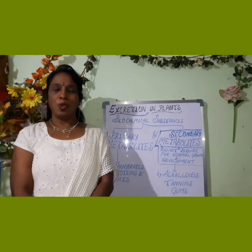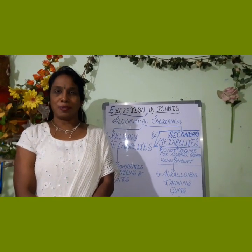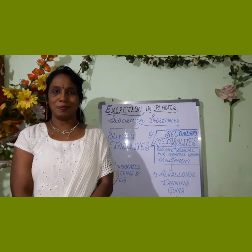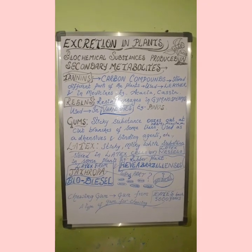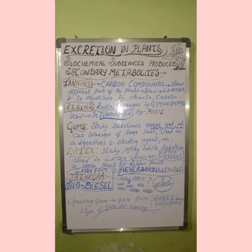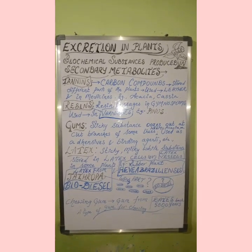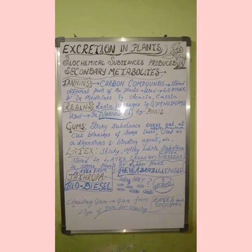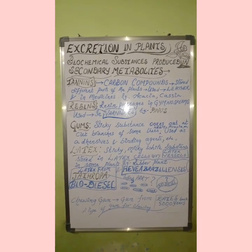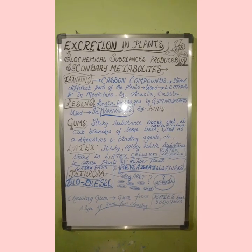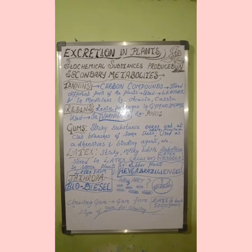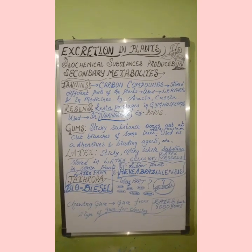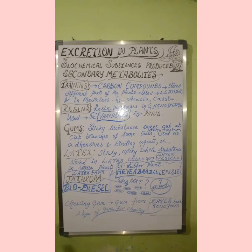Let's study about the biochemical substances produced in plants. These are broadly distinguished into two types: primary metabolites and secondary metabolites. Primary metabolites are carbohydrates, proteins and fats. Secondary metabolites are substances which are not much required for normal growth and development.